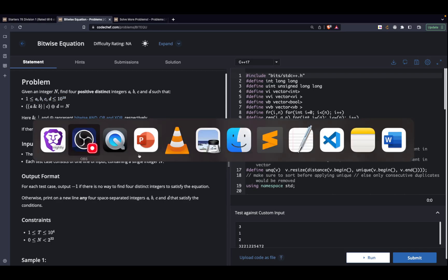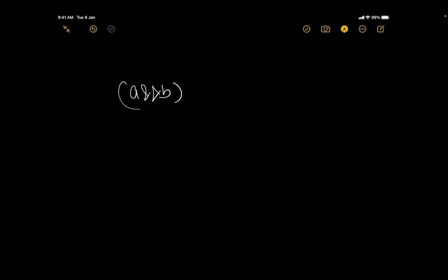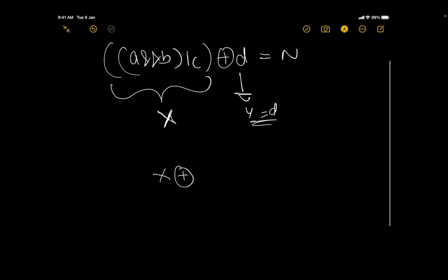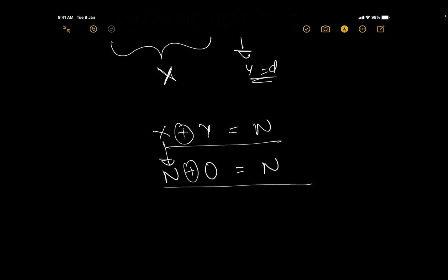This is a fairly easy question that requires some basic insights regarding bitwise operations. What they're asking is that (a AND b) OR (c XOR d) should give us n. I'll consider (a AND b) OR c as x, and d as y, so x XOR y should equal n. If x is n, then n XOR 0 gives n itself — so that's one approach.